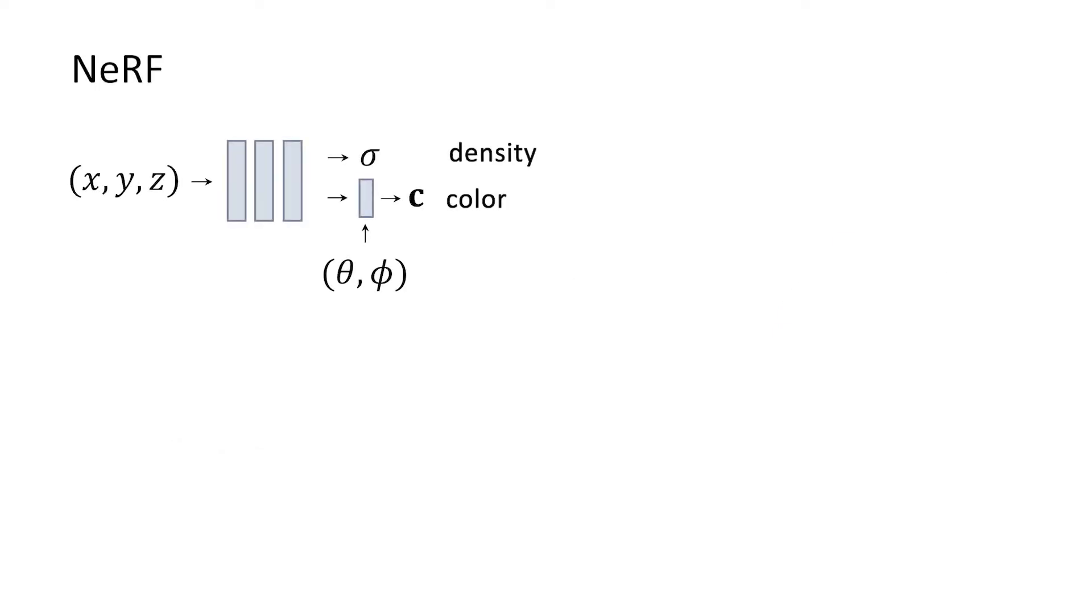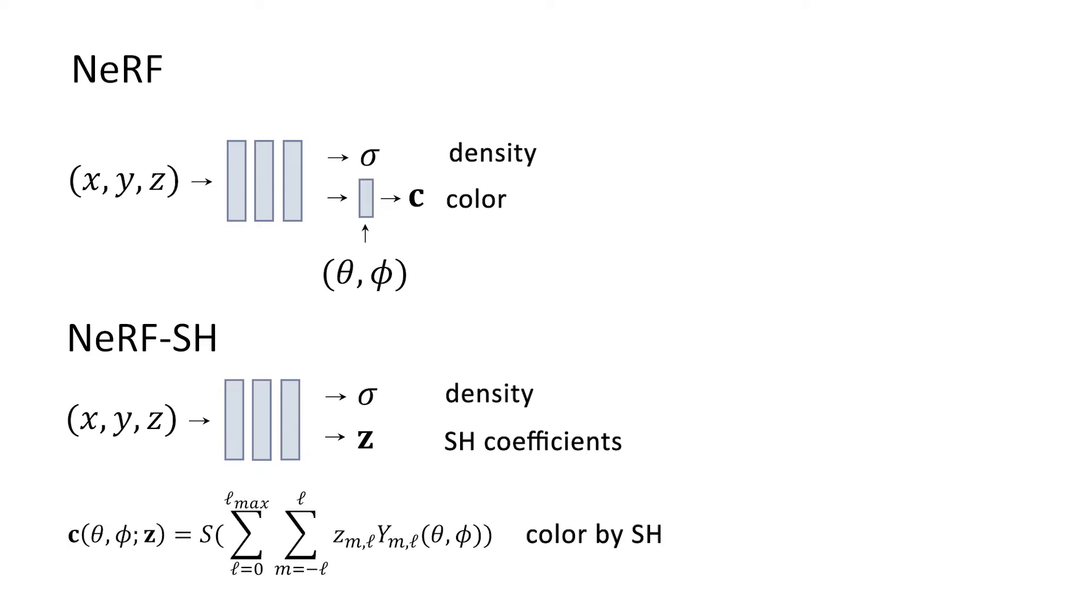Recall that NeRF learns density and color of a 3D scene using a neural representation. As a variation of NeRF, NeRF-SH learns density and SH coefficients, then computes view-dependent color by SH coefficients.